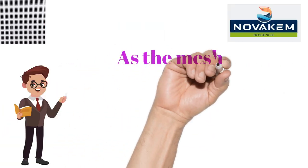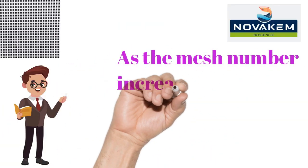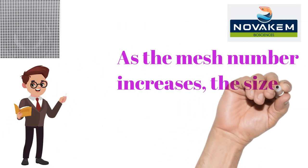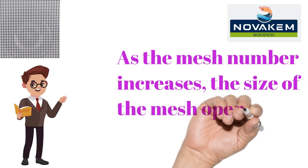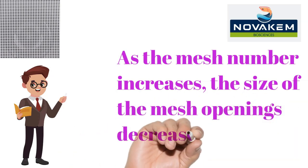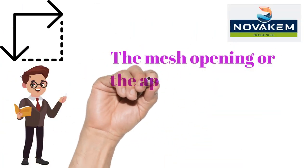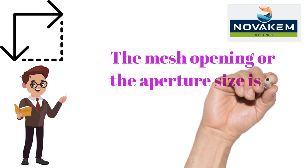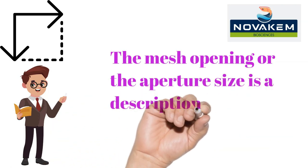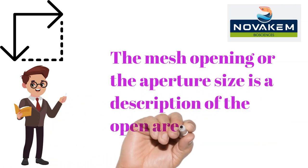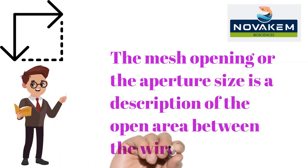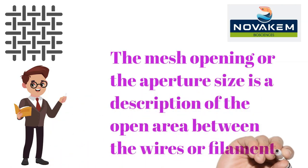As the mesh number increases, the size of the mesh openings decreases. The mesh opening, or the aperture size, is a description of the open area between the wires or filaments.